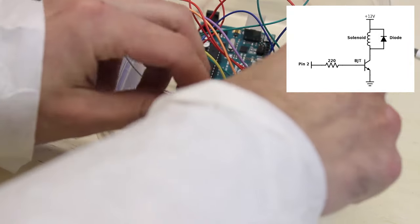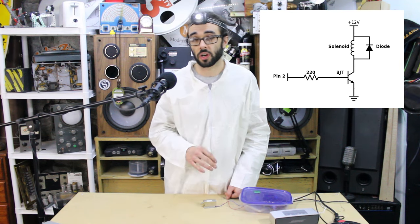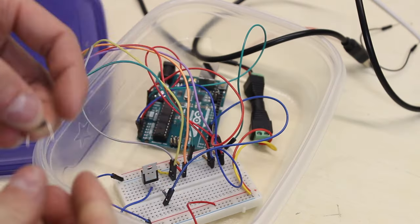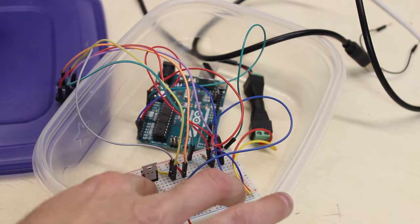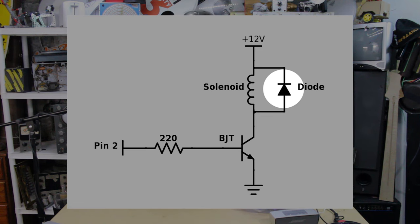Now for the solenoid, one terminal is connected to 12 volts and the other is connected to the collector of the transistor. And the emitter will be tied to ground. But don't forget the flyback diode. The solenoid is an inductor as you guys know from our previous videos. So we need a flyback diode to protect the transistor.